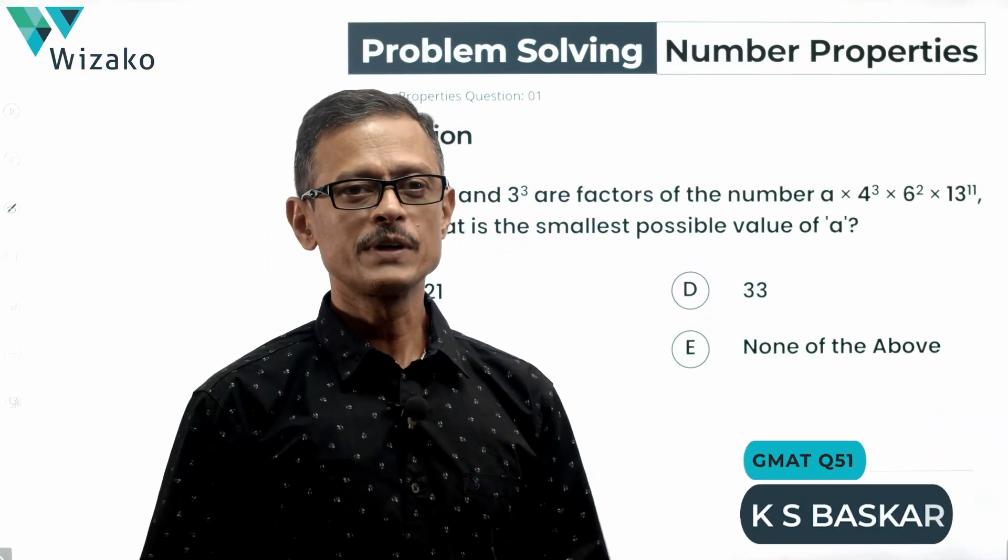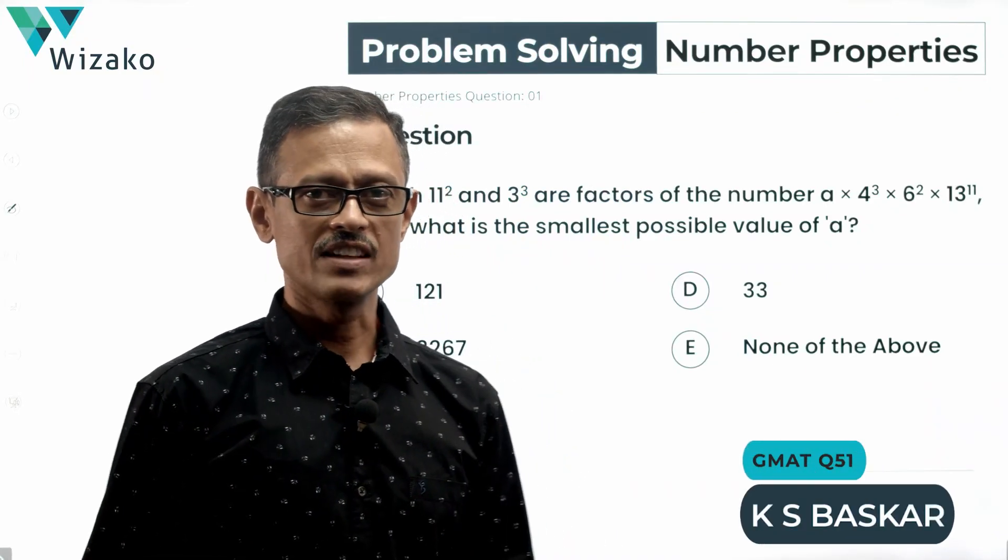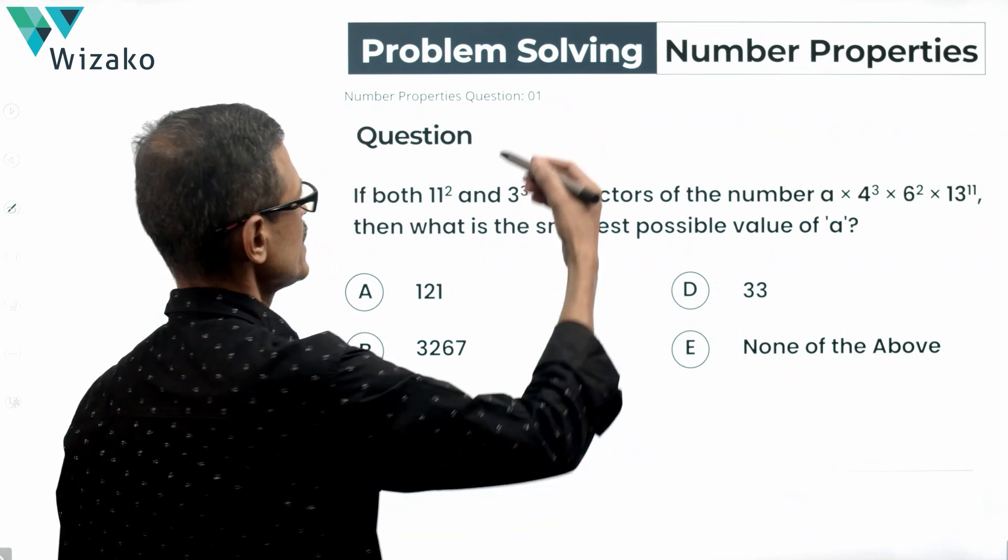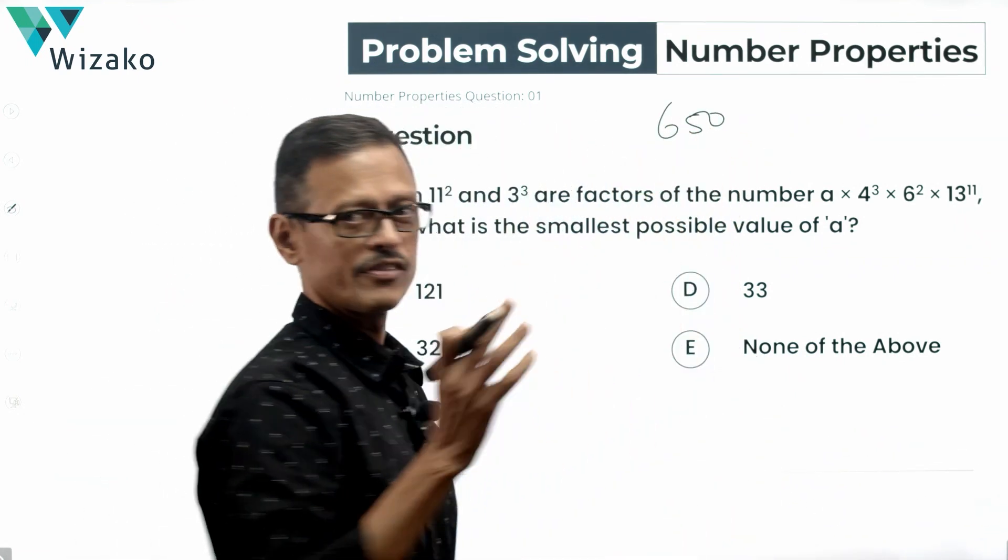Hi everyone, this is a GMAT number properties practice question. It's a problem-solving question, medium difficulty question. I'll classify the question somewhere around a 650 level difficulty question.